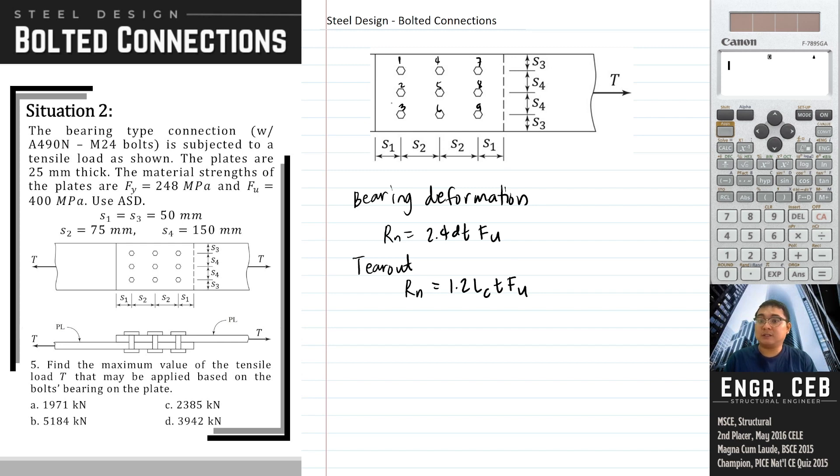As you can see, bolts 1, 2, and 3 will have the same strength because they have the same edge distance from the edge of the plate. We just get the minimum of the bearing deformation and tear out. So the R N for bolts 1, 2, and 3, that is the minimum of 2.4 DT FU and 1.2 LCT FU.